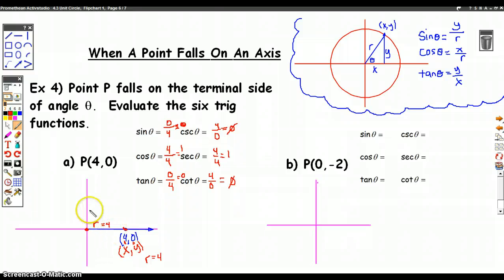These are called problems where they're called quadrantal angles. All it means is that the angles land on one of the axes, not in any of the quadrants where you could draw a picture. There's a bunch of ways to do problems like that, but I think this is a very useful way to do it. Think of your definitions of sine and cosine in terms of the coordinates, and that'll help you.